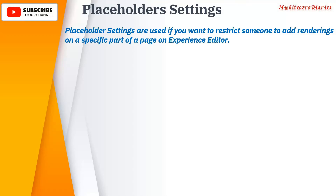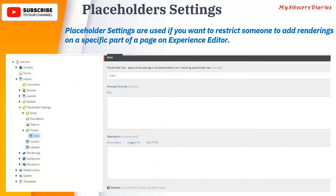For example, if you want to have a banner on your home page but there are size constraints, and the author uses something else in that place, then the UI will not look good. There are some places where you want to restrict authors to add only specific kinds of renderings — in that case, we will use placeholder settings.